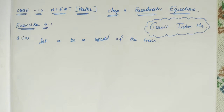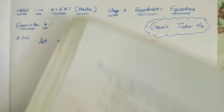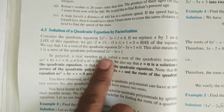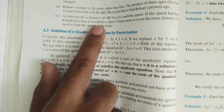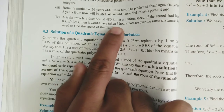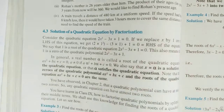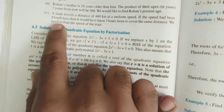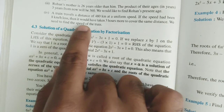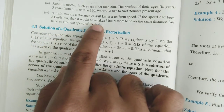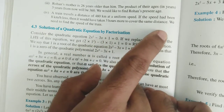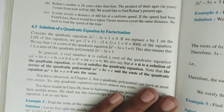What are they given in this problem? They are given a situation, and we should represent the situation in quadratic equation form. A train travels a distance of 480 kilometers at a uniform speed. If the speed had been 8 kilometers per hour less, then it would have taken 3 hours more to cover the same distance. We need to find the speed of the train.